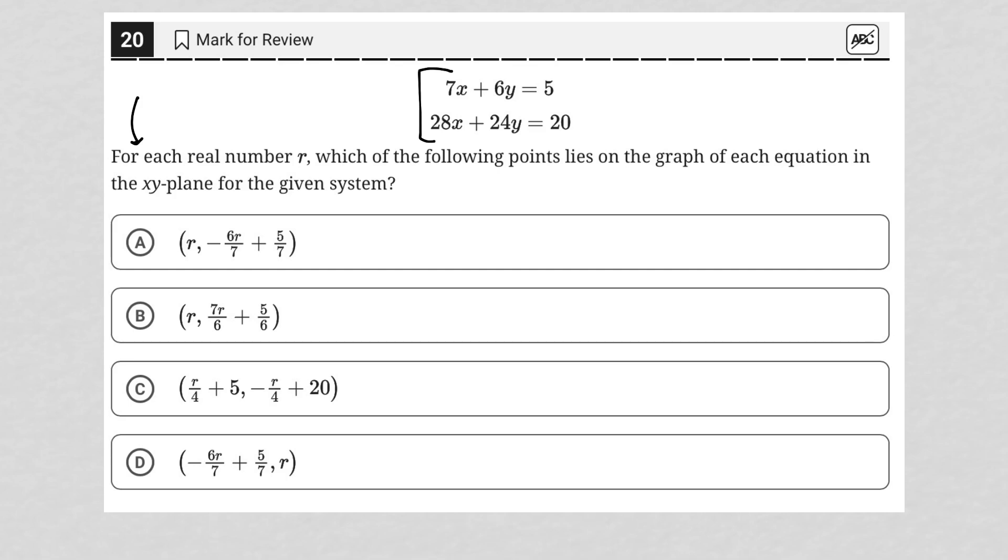Looking at the answer choices, I see that each answer choice has the variable r. R is also obviously in the question itself. So I'm going to use the strategy I call plug in your own number, P-I-Y-O-N. I'm going to say that r is equal to 2. It's my favorite number to use for plugging in your own number. And then we're going to just test out each answer choice, which is a bit different than how I usually use this strategy, just because there isn't an r in the question. There's nowhere for me to plug r into the question. I can only plug r's into the answer choices. And then we'll just use the question to test whether or not we're good.